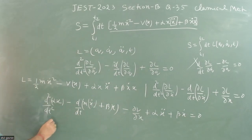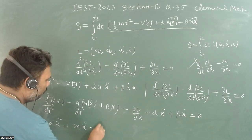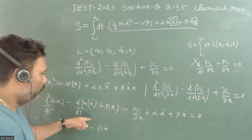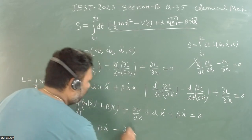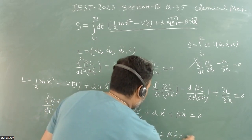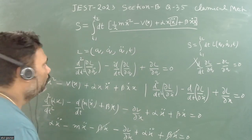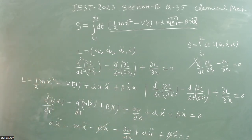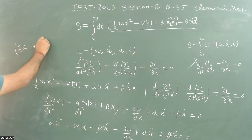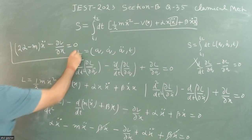Now we differentiate: d²/dt²(alpha x) gives alpha x-double-dot, since x is a dynamical variable and x-double-dot is well-defined. After differentiation we get minus m x-double-dot minus beta x-dot. Cancelling terms: two alpha x-double-dot terms combine, giving the final equation of motion: (2 alpha minus m) x-double-dot minus dV/dx equals zero.